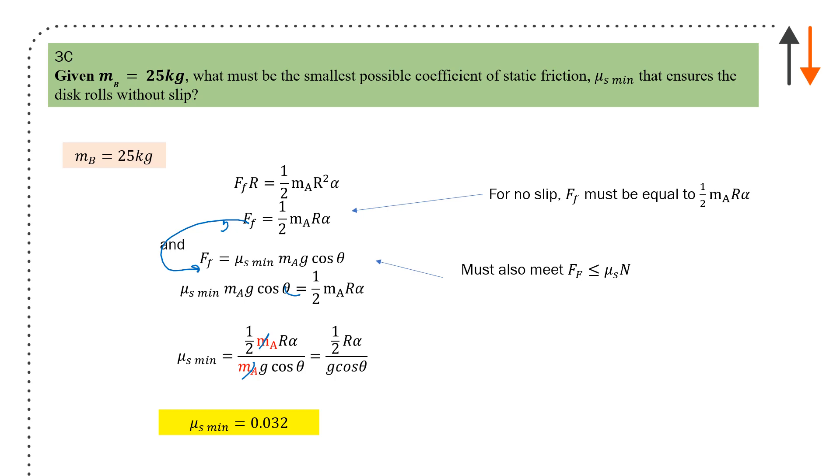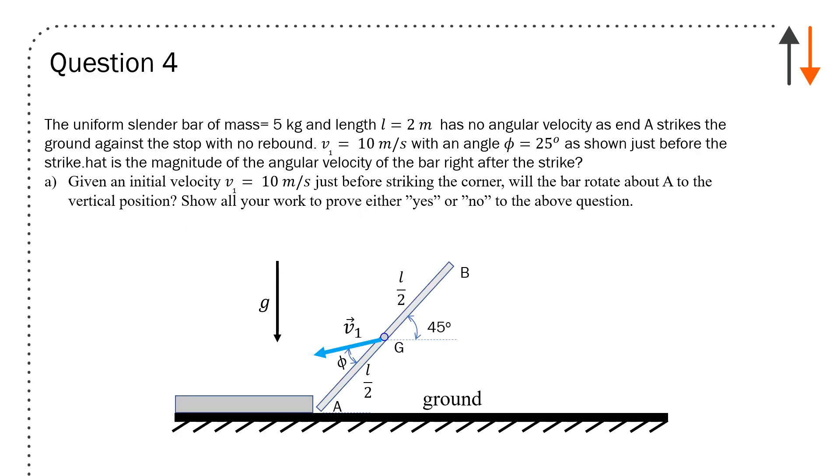Next problem: a uniform slender bar of mass 5 kilos and length 2 meters has no angular velocity as end A strikes the ground. It is vertically dropping, and as it drops it strikes the ground against the stop with no rebound—it doesn't move, it just snaps down into that position. v_1 in the diagram is 10 meters per second with an angle of 25 degrees just before the strike.